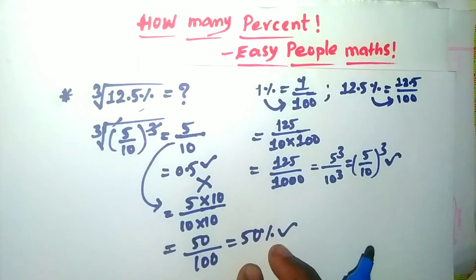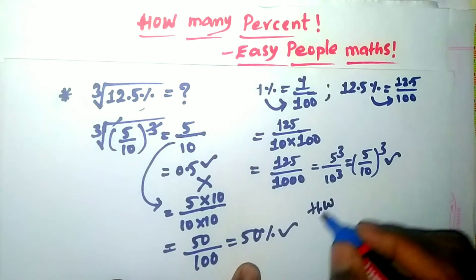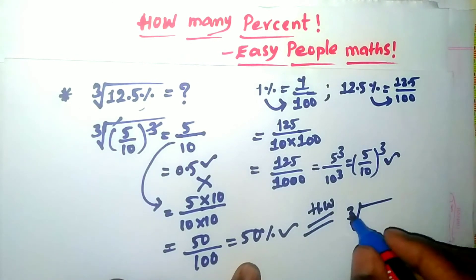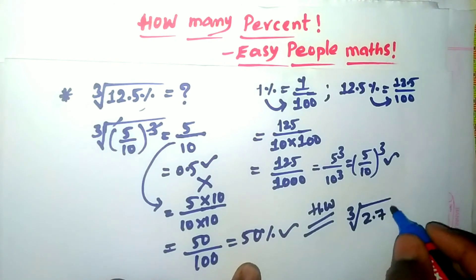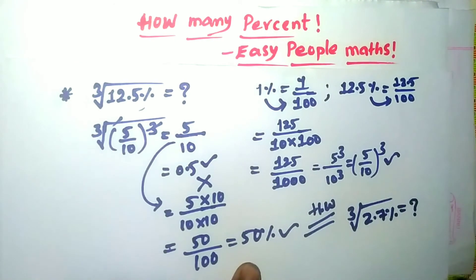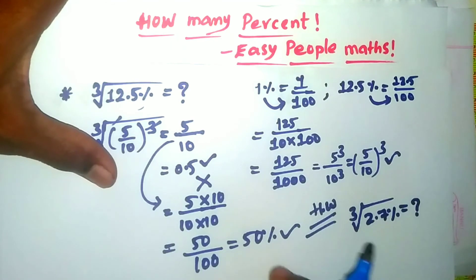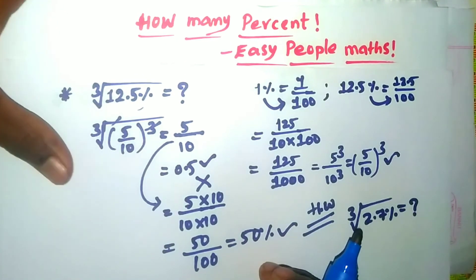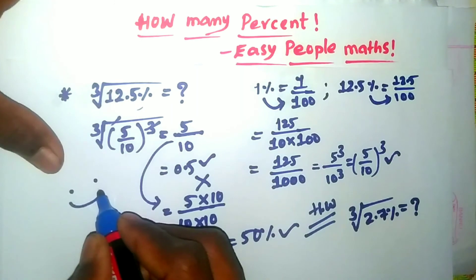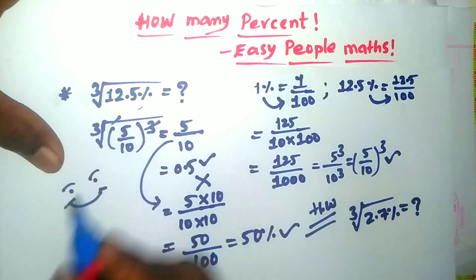Okay, if you have a clear understanding of this concept, you will encounter many similar problems. You will find the comment box. Cube root of 2.7% — try this in the comment section. If you have a doubt, comment and I will try to reply. If you have a clear understanding, watch the next video. Thank you.